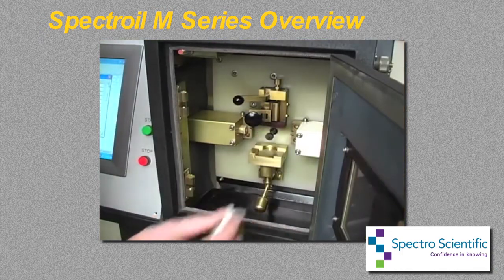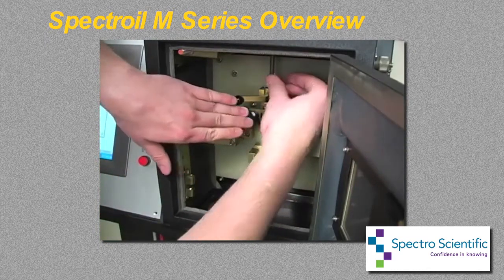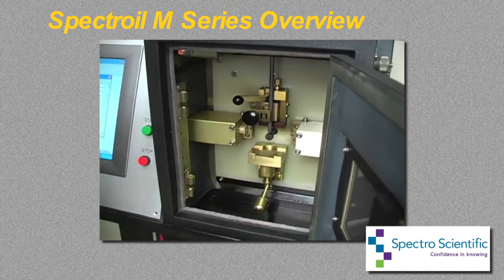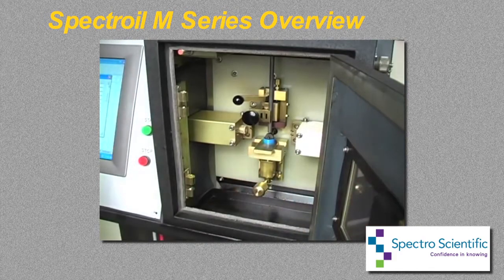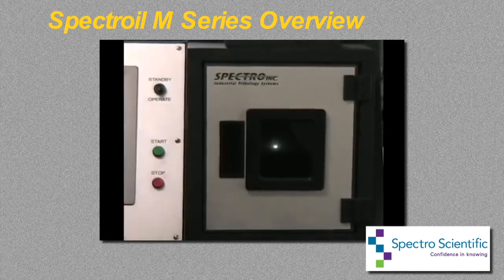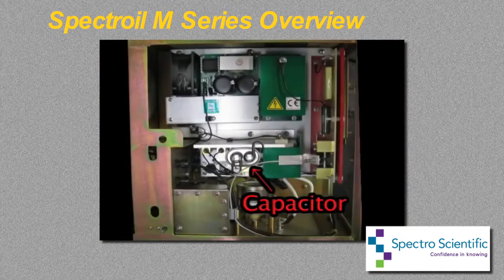To run a test, the rod and disk are placed in the sample stand and the gap is set. A sample of two milliliters that requires no preparation is placed on the table, which is then raised so the disk electrode located on the shaft is partially immersed in the sample. Once the start button is pressed, the disk electrode rotates on the shaft and carries the sample into a gap formed by the two electrodes. An electric charge stored on a capacitor is discharged across this gap, creating a high-temperature electric arc that vaporizes a portion of the sample forming a plasma.